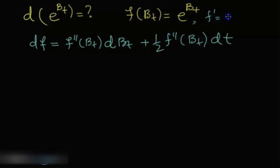The first derivative is also e to the B_t with respect to B_t, and the second derivative also with respect to B_t is e to the B_t because they have the same derivative. So we are differentiating with respect to this variable B_t. Then we can just substitute the values. By substituting the values we get the differential of e to the B_t